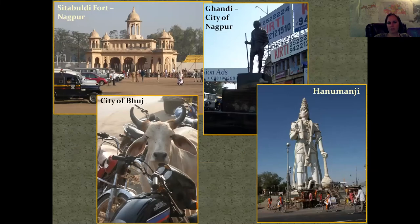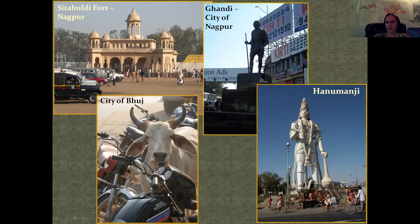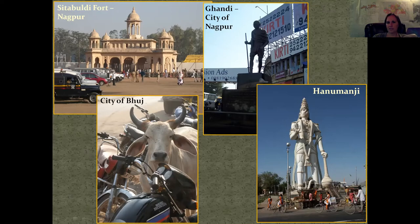Here are some fun pictures of India. This is a fort in the town we stayed in, Nagpur, and here's a statue of Gandhi in that same city. Then in the Western Ghats, this is the city of Bhuj, which is almost in the Arabian Sea — almost in Pakistan. In fact, we were on the Pakistani border for much of our collecting, and the Pakistani jets were constantly flying over us, buzzing the border. And in India, cows are sacred, so they're everywhere — they just walk around like stray cats and won't move out of the road. And this is Hanumanji, the monkey god, a helper to Lord Rama, found on the way to the Western Ghats.